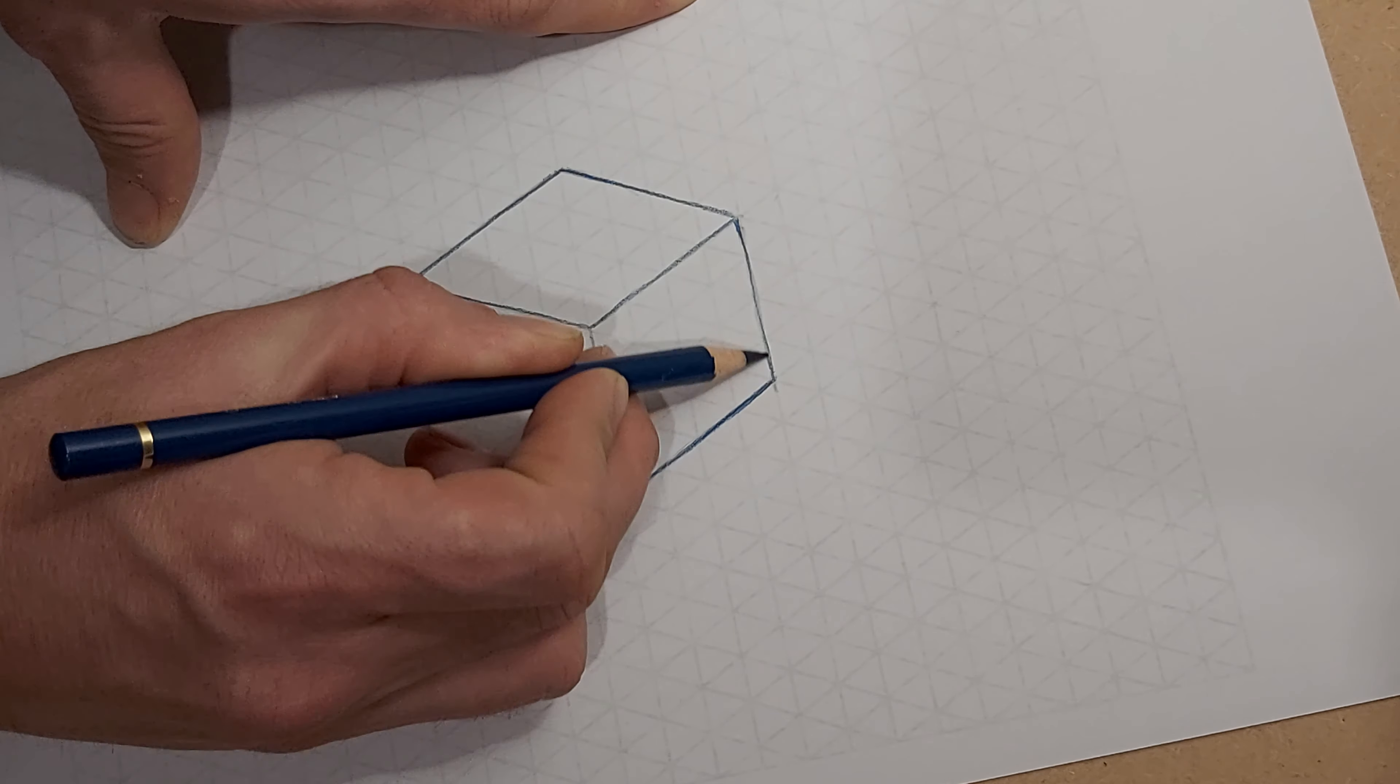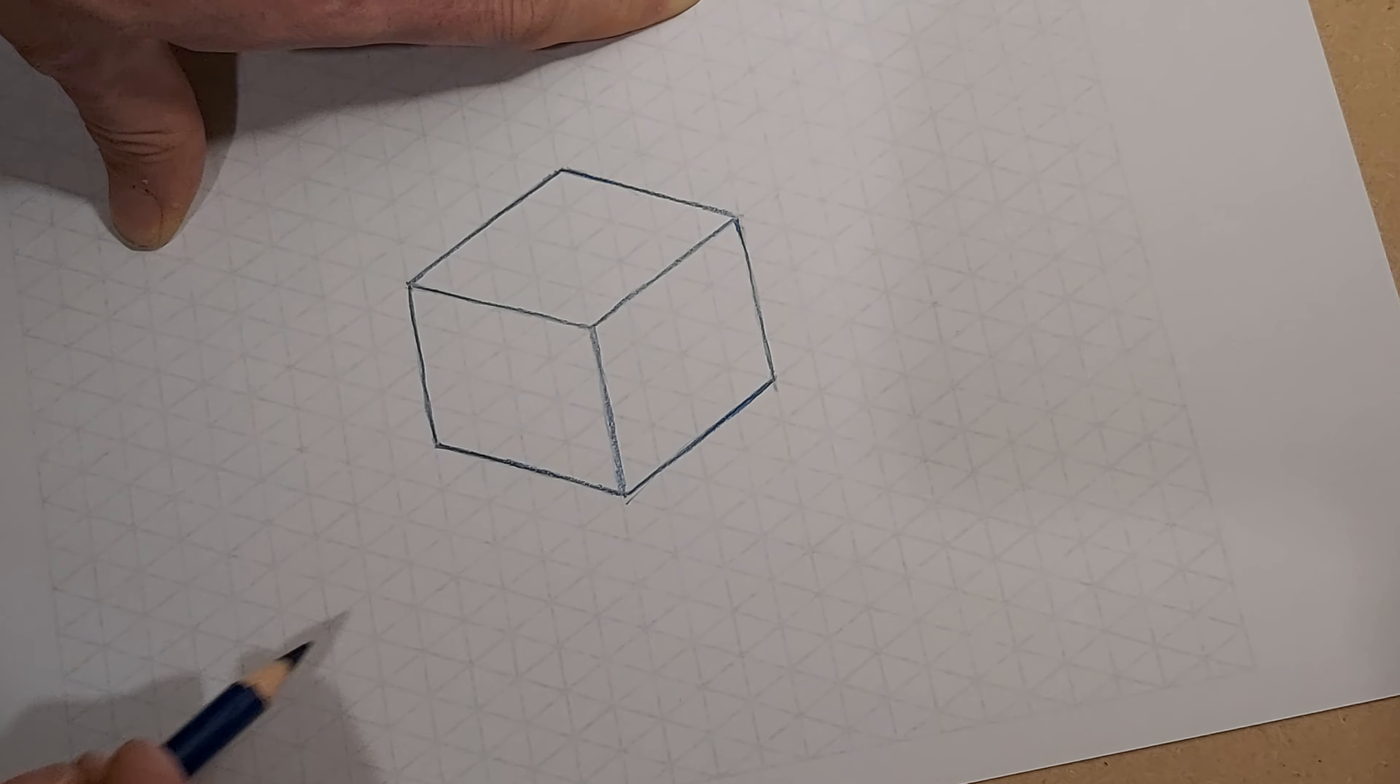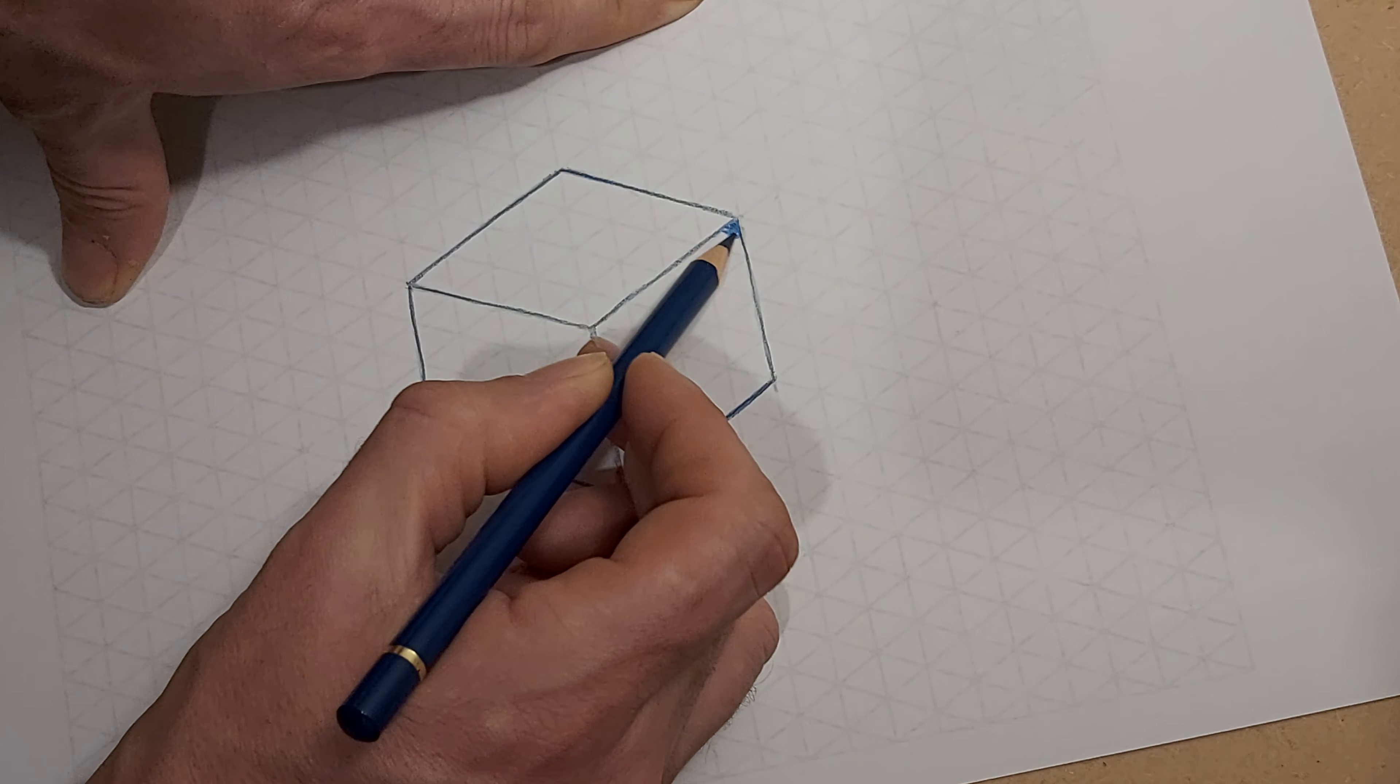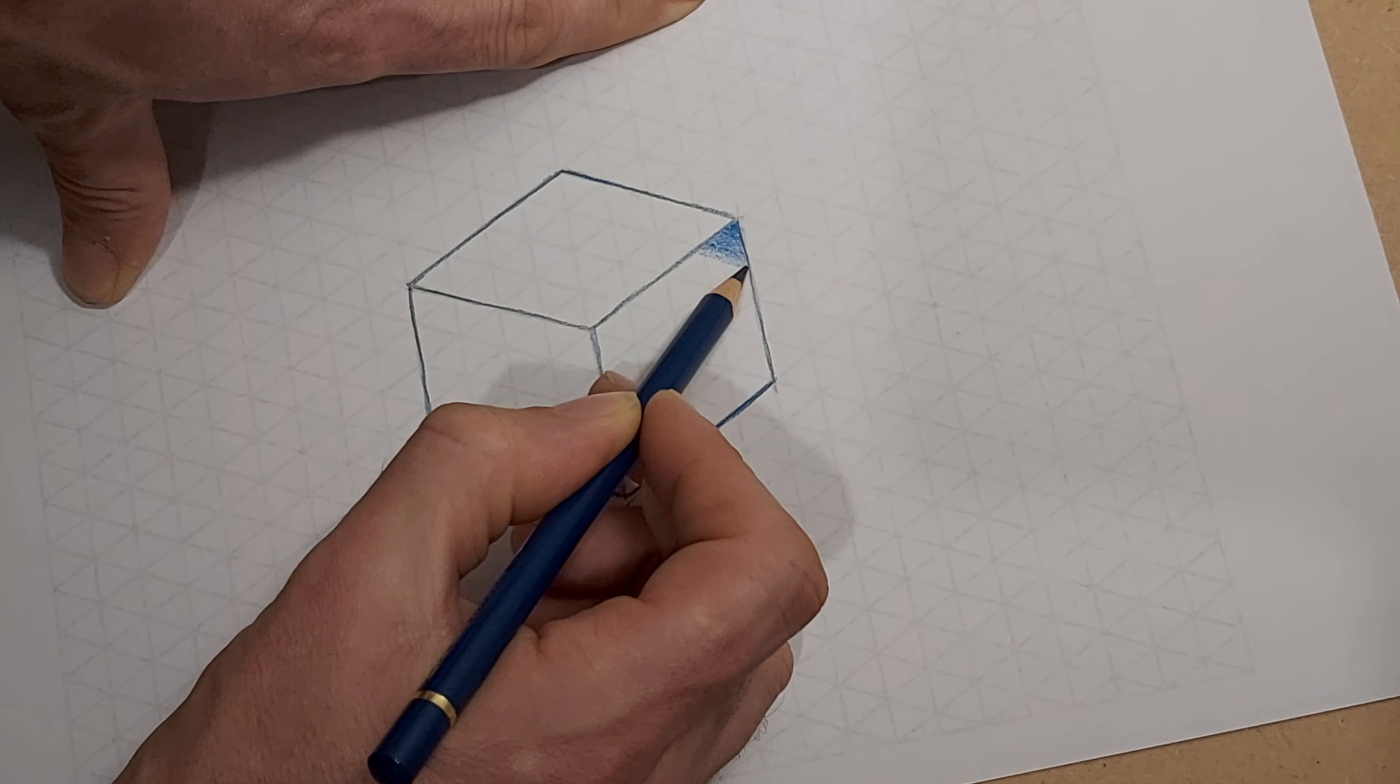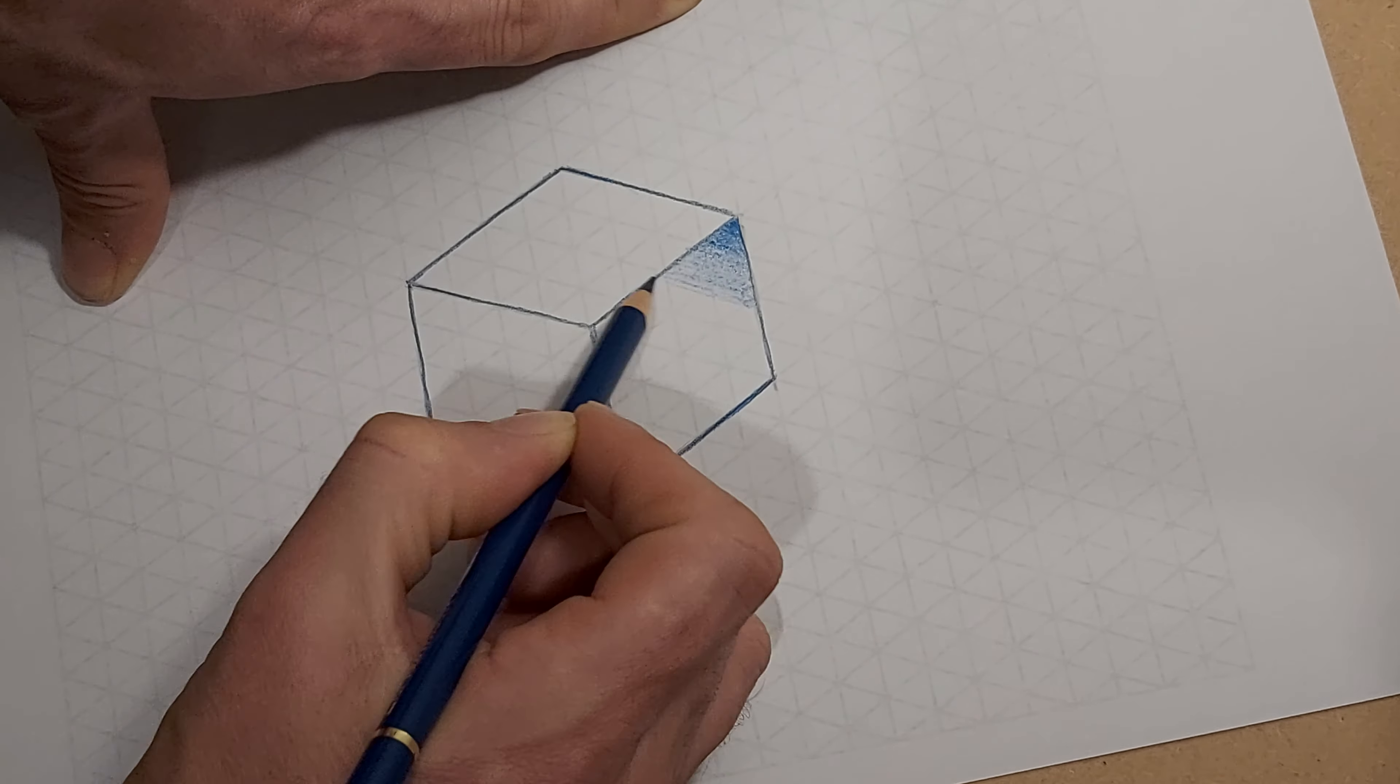And then I'm going to start—I'll leave the top white. This is going to be my darkest side. I'm going to start in the corner, use the grid as a guideline to get a diagonal line, and I'm going to gradually put less pressure on the pencil as I come out of this corner.